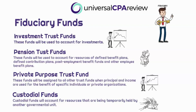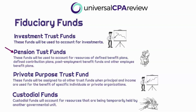The investment trust fund is used to account for investments. Pension trust funds are government funds related to pension plans — similar to retirement accounts — and they account for resources of defined benefit plans, defined contribution plans, post-retirement benefit plans, and any other employee benefit plans. Private purpose trust funds are assigned to all other trust funds when principal and income are used to benefit specific individuals or private organizations. Custodial funds are somewhat new to the exam and are used to account for resources that are being temporarily held by another governmental unit. Unlike proprietary funds, we're going to be reporting these funds by fund type, not major funds.